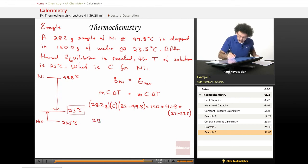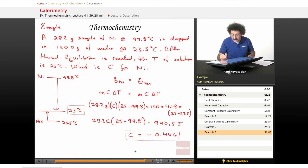Let's go, 28.2 C times 25 minus 99.8 equals 940.5 joules. When we run through this math, we multiply this by this, divide through, we should end up with 0.446. This is the heat capacity for the nickel. This is in joules per gram per degree Celsius.